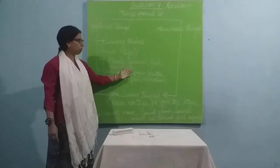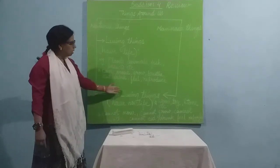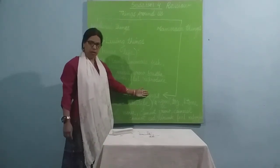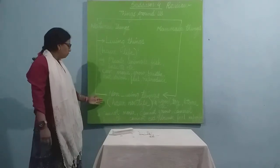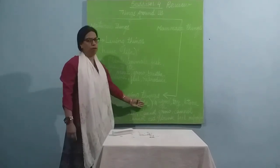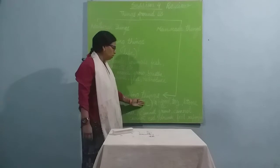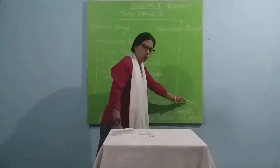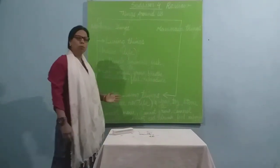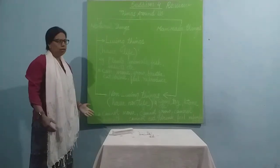When we say non-living things, we mean the things which do not have life. Example, wood, toy, stone, sun, moon, sand, etc.